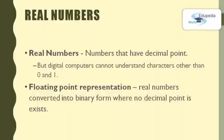The real numbers are the numbers where a decimal point may exist. This type of representation of a real number is called fixed point representation. But a digital computer cannot understand a character other than 0 or 1, as we discussed in a previous episode. So in order to make the computer understand, a real number is converted to binary in such a way where no decimal point should exist. This form of representation is called floating point representation.